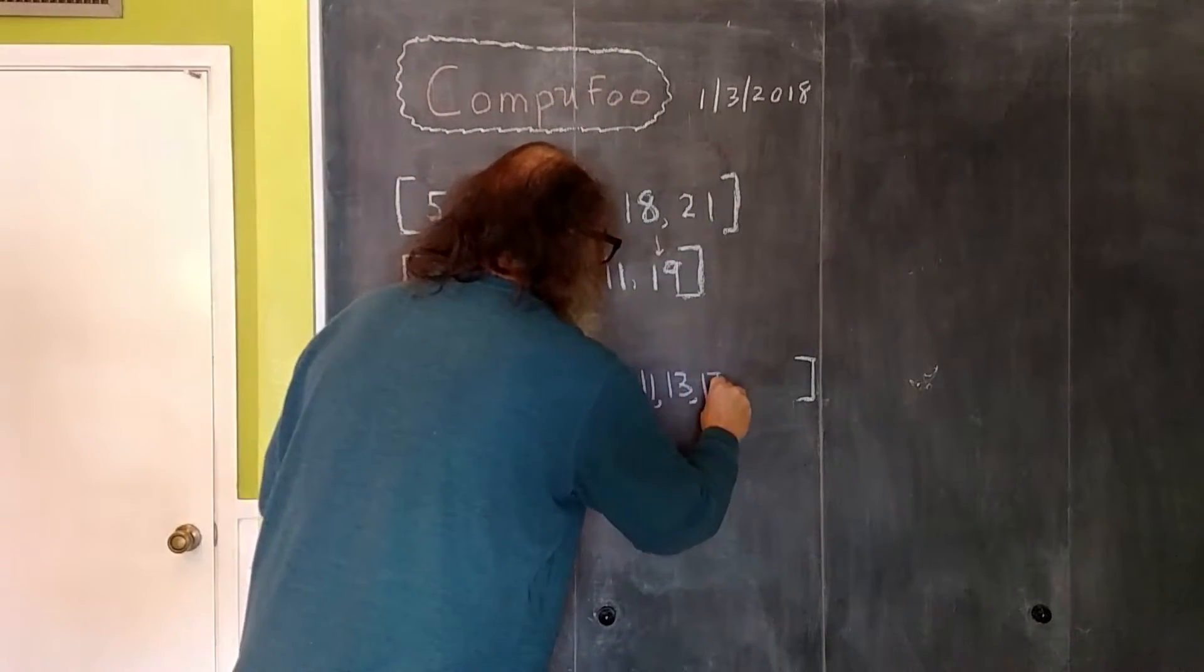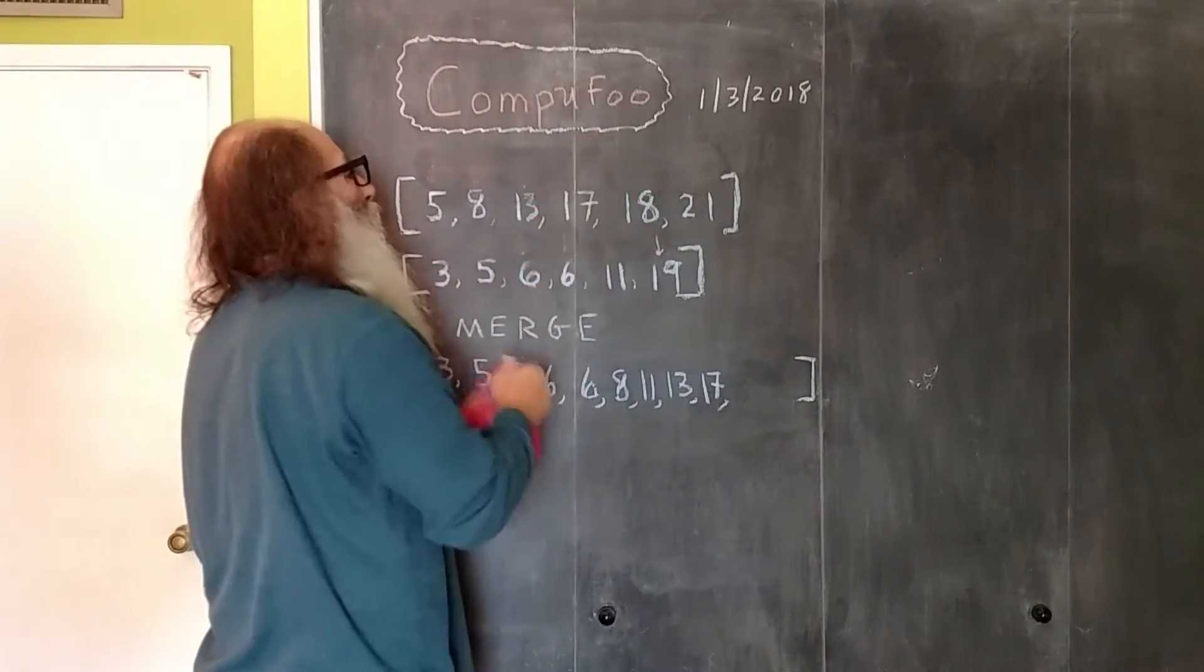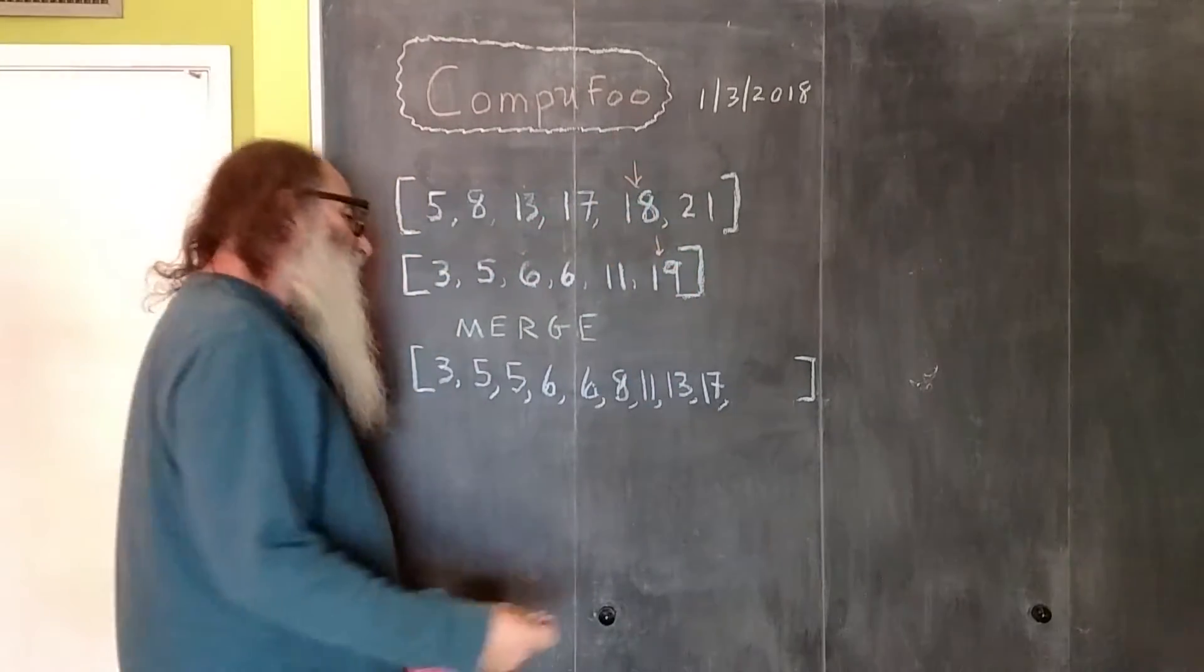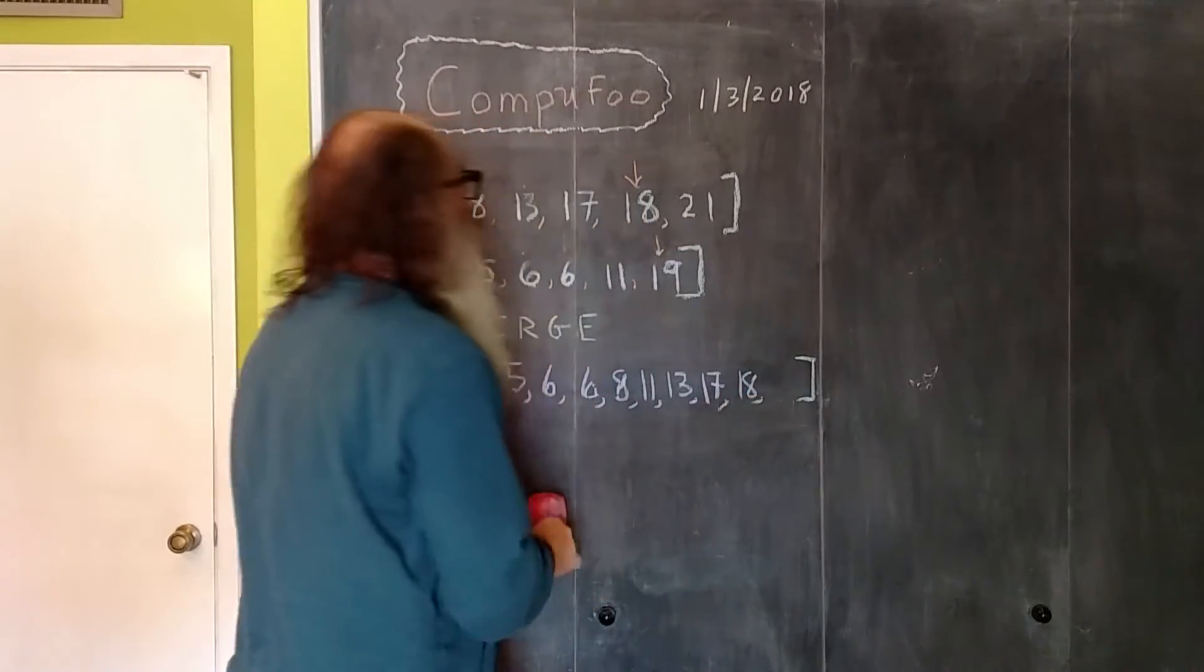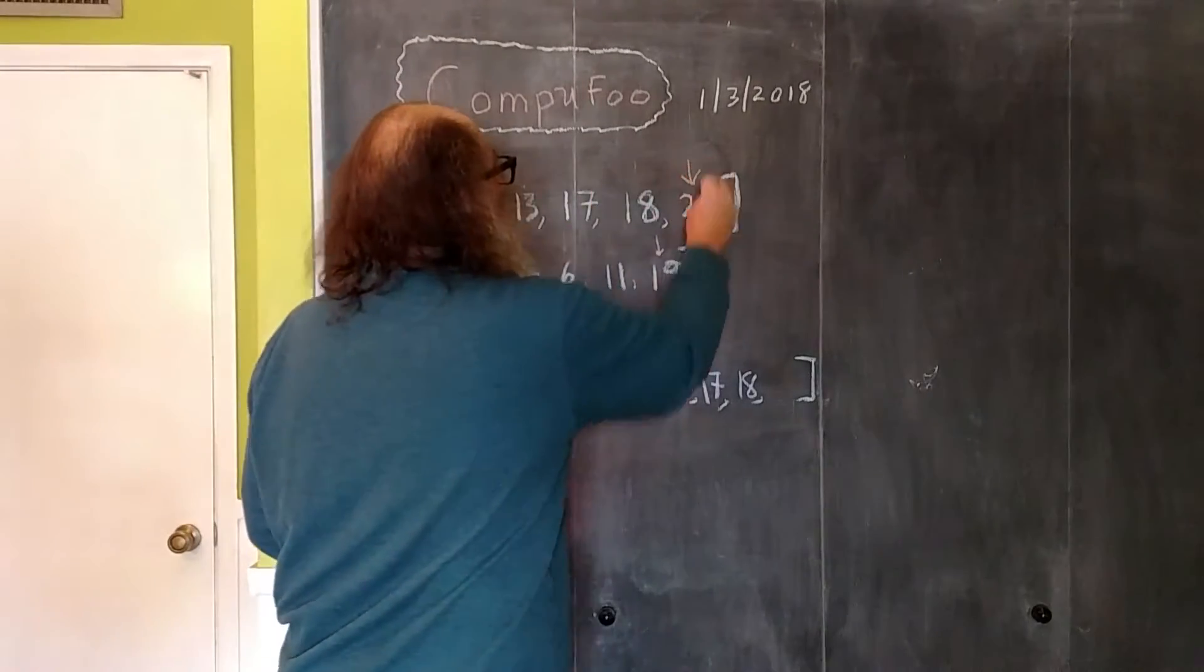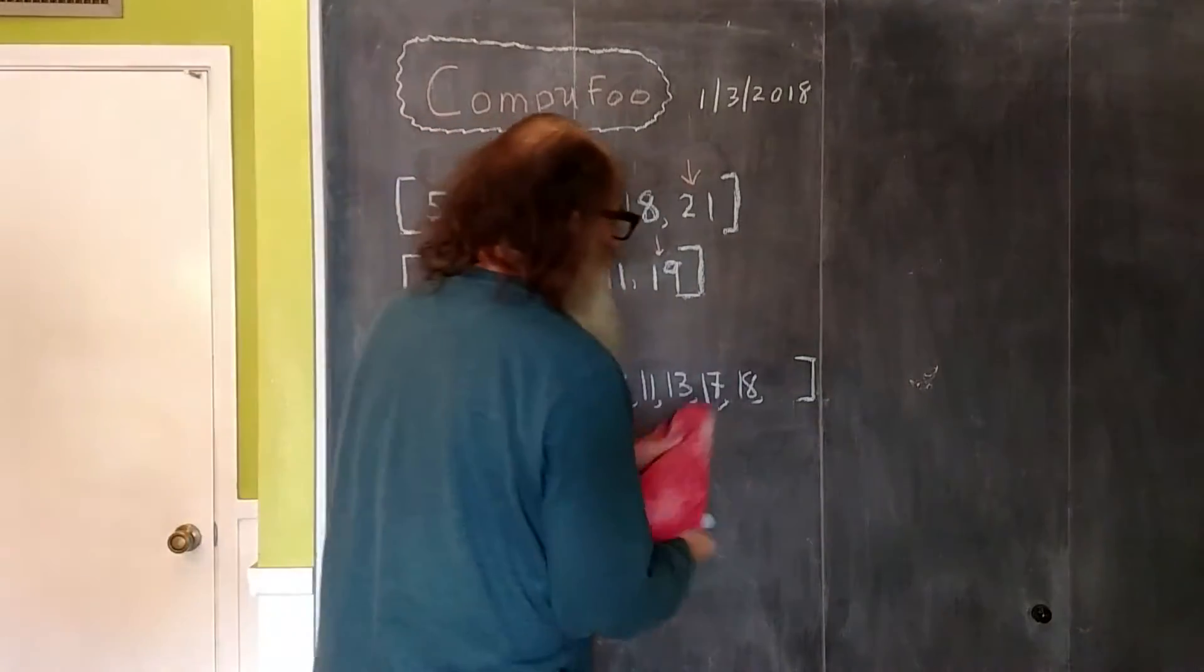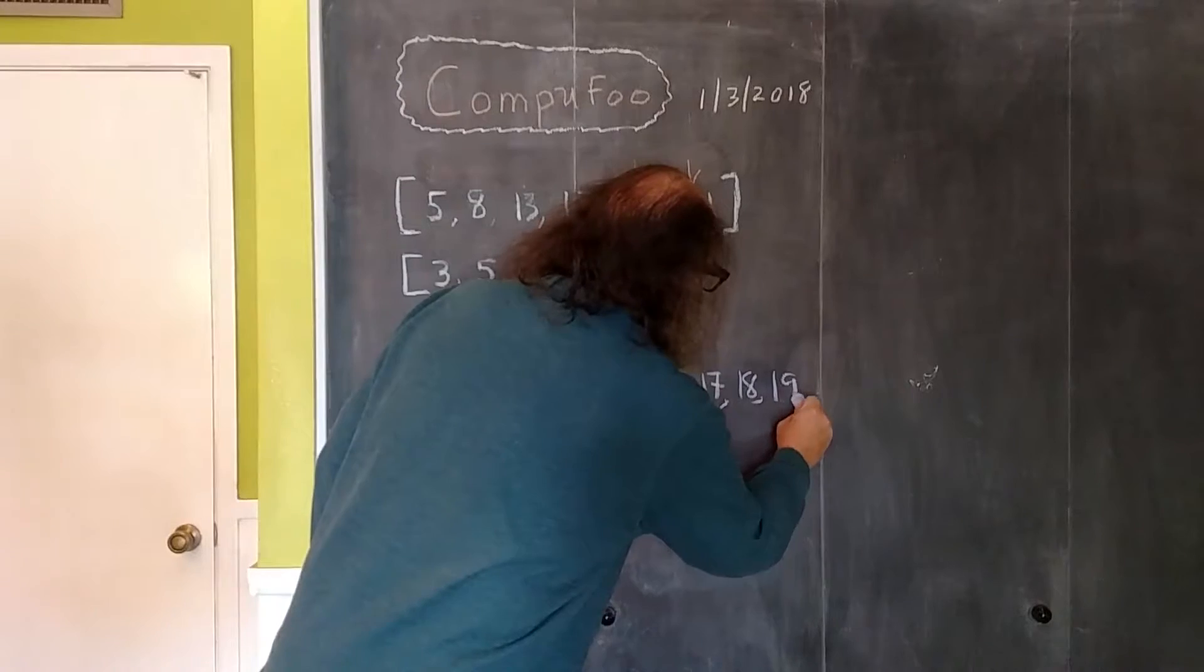To the merged array. We adjust this pointer. Eighteen less than nineteen? That's true. So the eighteen goes into our merged array. We go ahead and adjust this pointer. Twenty-one less than nineteen? Well, that's false. So the nineteen is going to go into our merged array.